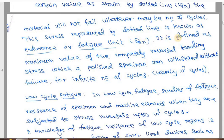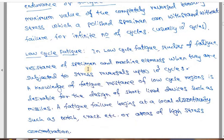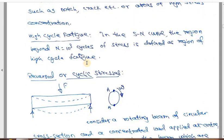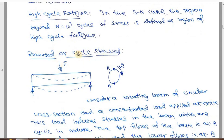Formally, the endurance limit is defined as the maximum value of completely reversal bending stress which a specimen can sustain. The physical phenomenon explains how exactly a reverse or cyclic stress acts on a member.